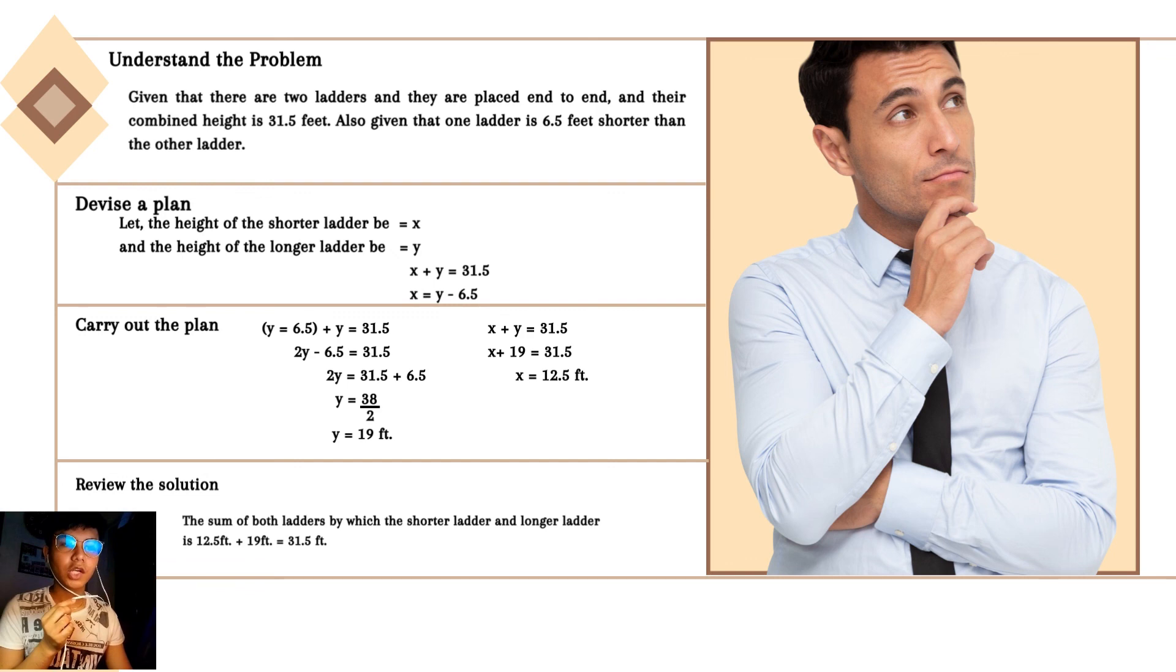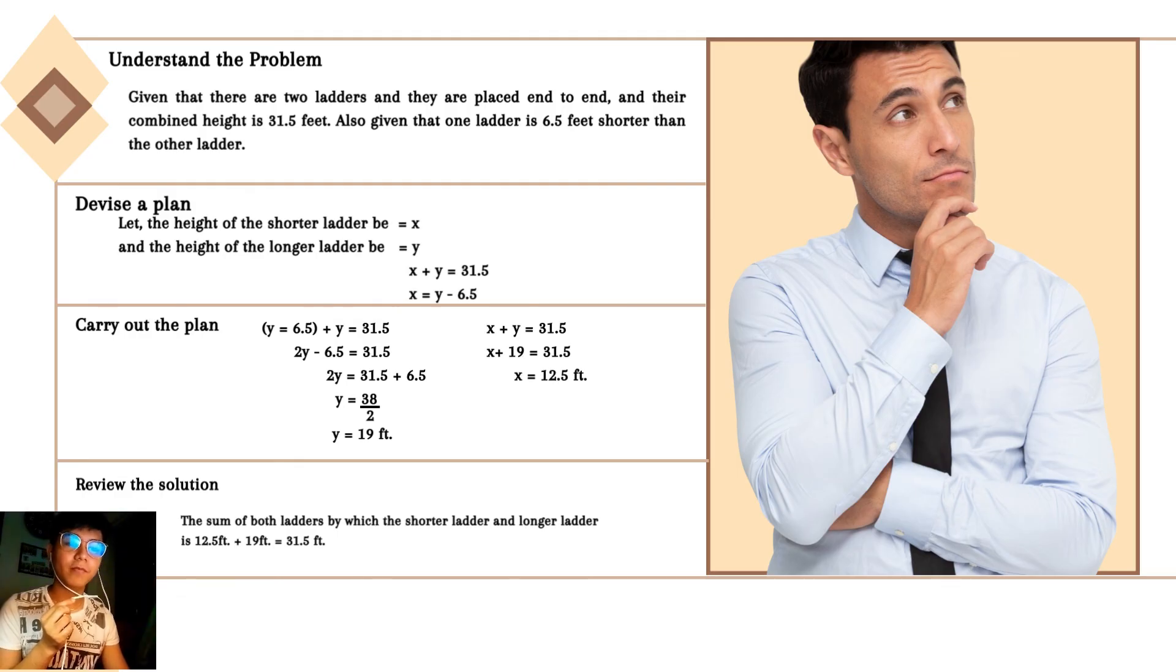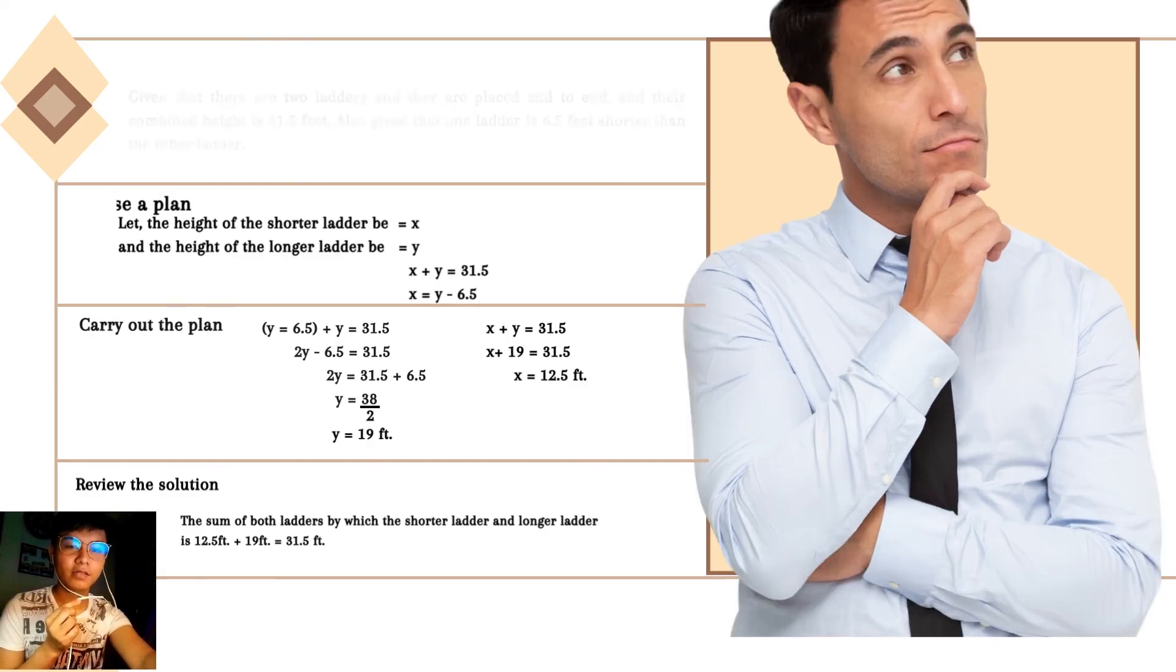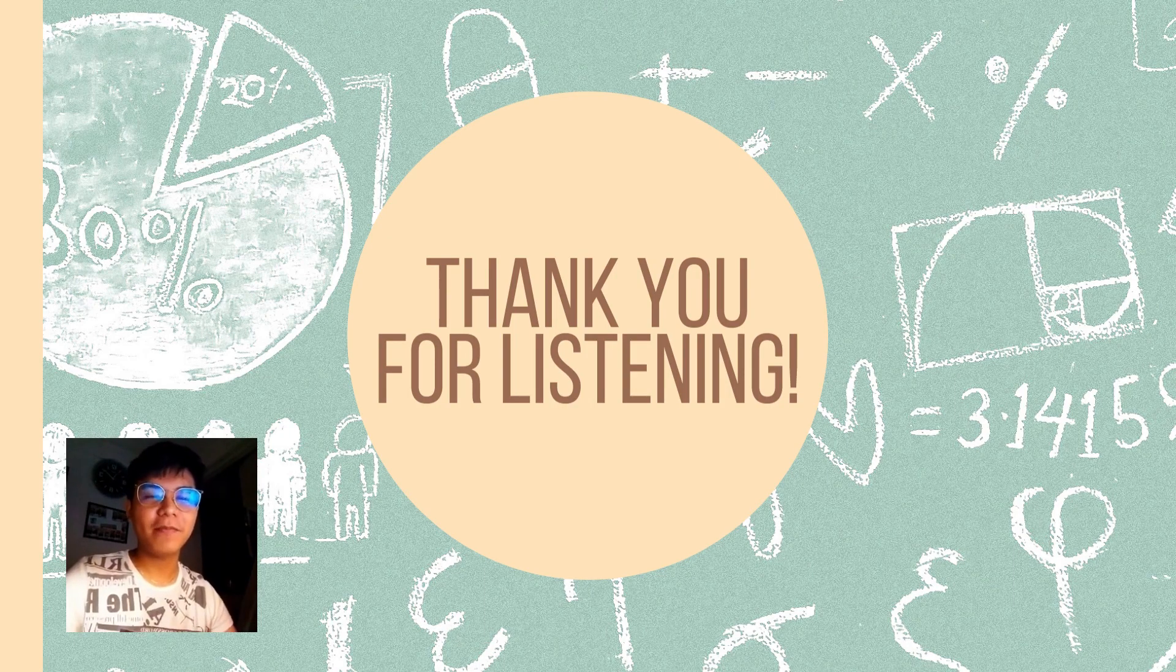Review the solution. The sum of both ladders, the shorter ladder and the longer ladder, is 12.5 feet plus 19 feet which equals 31.5 feet. And there you have it. Thank you for listening to my PETA number one.